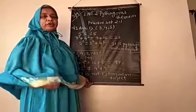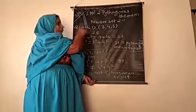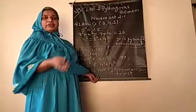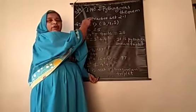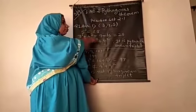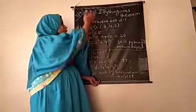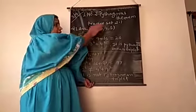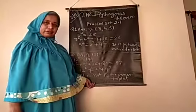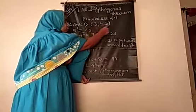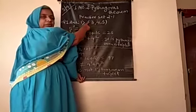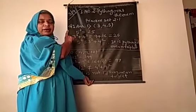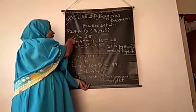We are going to start Practice Set 2.1. In question number 1, which is objective type, you have to decide for the given 3 numbers whether they are a Pythagorean triplet or not. You can use the formula already given to check this. From the 3 numbers, observe which is the greatest number and first take the square of that largest number.